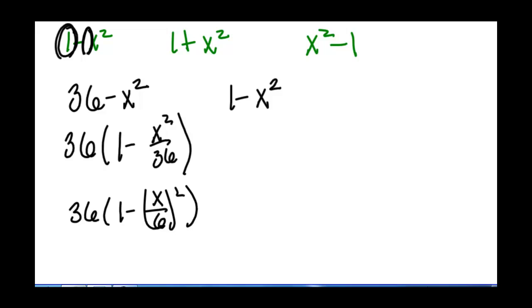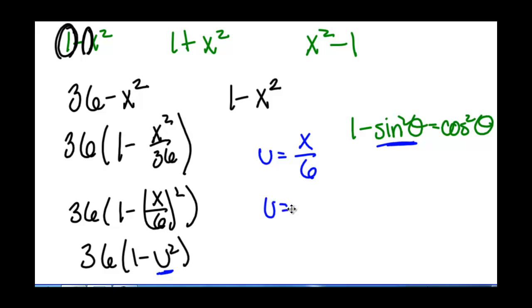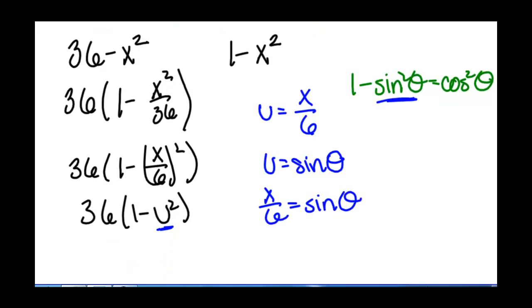Now we can use the substitution u equals x divided by 6, and that will give us 36 times 1 minus u squared, which looks like the form for the substitution we want to make. We use the trig identity that 1 minus sine squared of theta equals cosine squared of theta. So if u is x over 6, then we want to let u be sine of theta as well. Since u is x over 6 and u is sine of theta, then x over 6 equals sine of theta, which means that x equals 6 sine of theta.